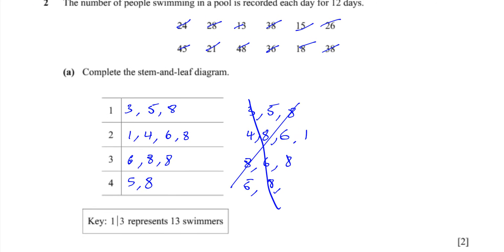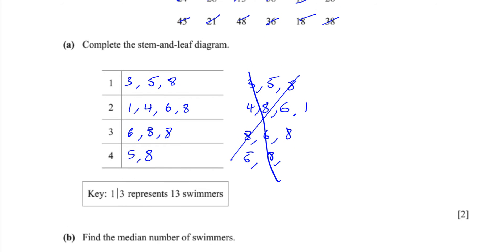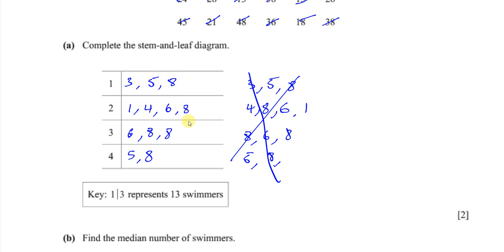And that helps us because part B says find the median number of swimmers. So you should always put them in order. If you get one that's not ordered, supposing they give you one that's not ordered, you must order it before answering questions such as part B. One of the advantages of stem and leaf diagrams is you can see where the majority of the entries are. We can see here that the number in the 20s is more common than the others.